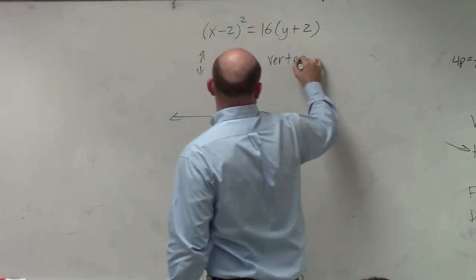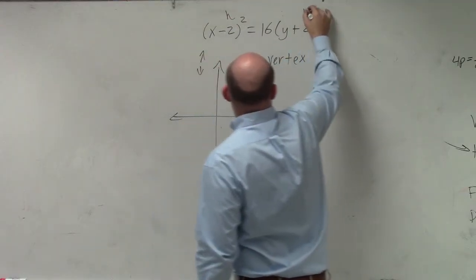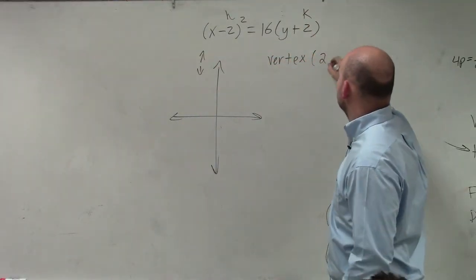My vertex is my h and my k, so therefore that's going to be 2, negative 2.